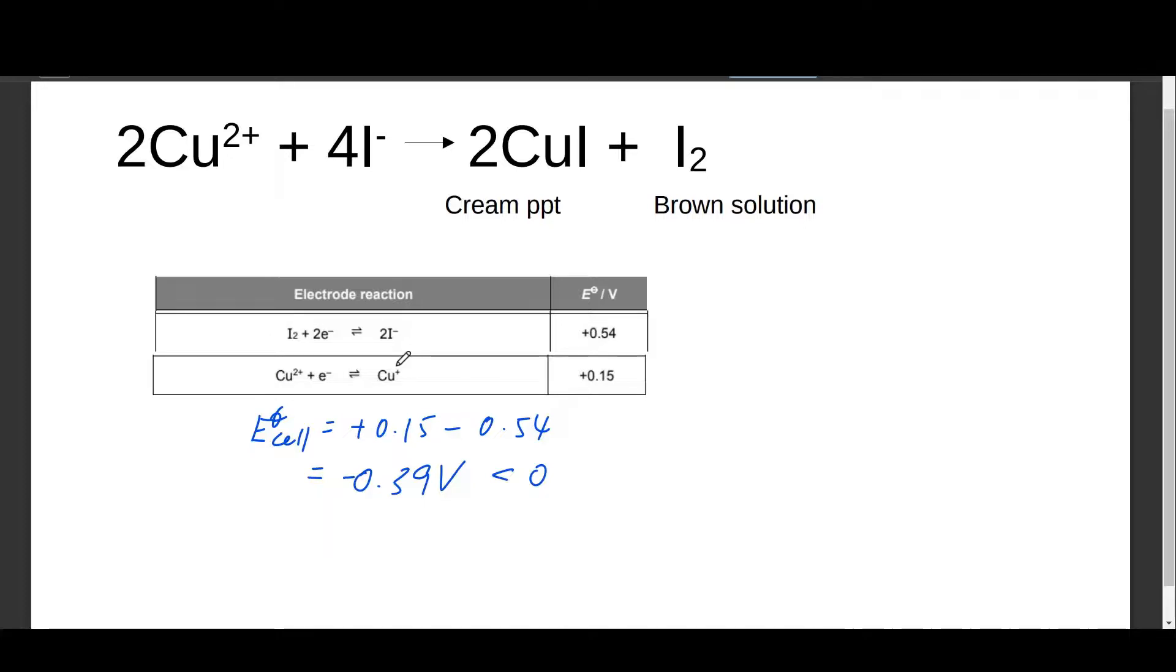So what's actually happening? The main reason for this occurring is because of non-standard conditions, and the main culprit is actually this cream precipitate. If you think about it, what happens is this CuI will precipitate out when the reaction occurs. In other words, your copper one ion concentration is actually decreasing. When concentration of Cu⁺ decreases, the position of the equilibrium will shift to the right to counteract the decrease in Cu⁺.